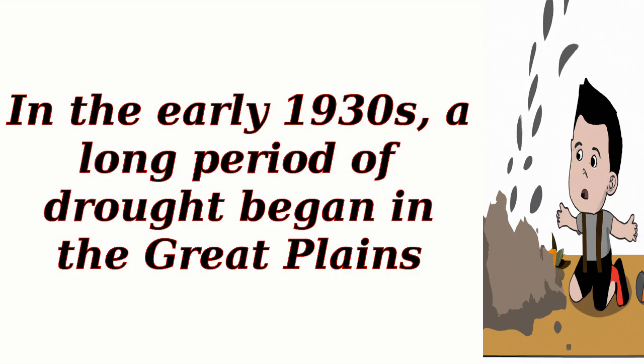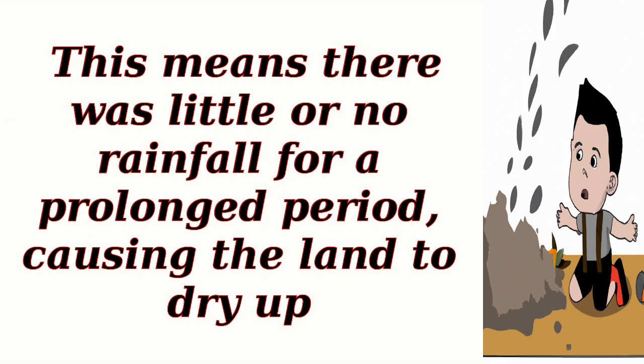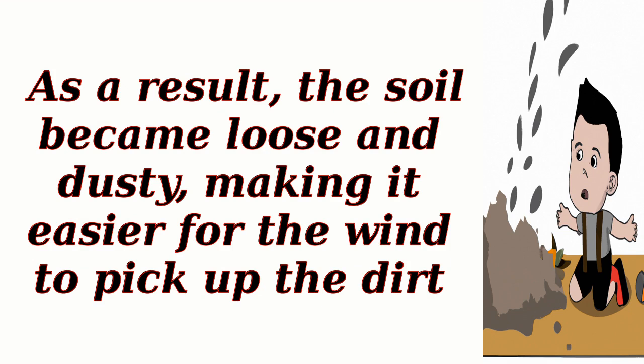In the early 1930s, a long period of drought began in the Great Plains. This means there was little or no rainfall for a prolonged period, causing the land to dry up. As a result, the soil became loose and dusty, making it easier for the wind to pick up the dirt.